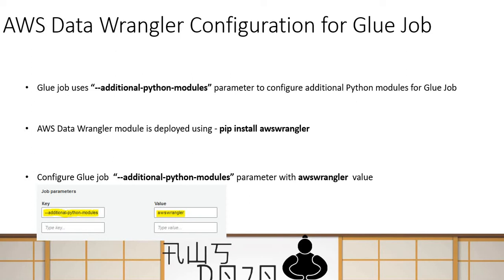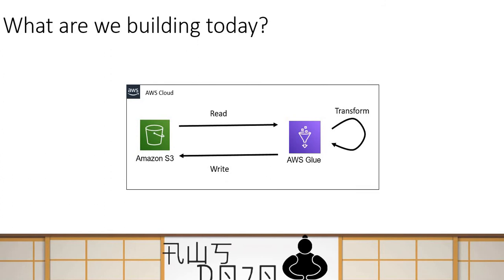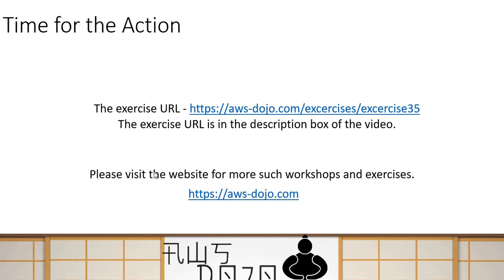What are we going to build today? It's a very simple exercise. We will have data in an S3 bucket, configure a Glue job with Data Wrangler to read data from S3, perform a simple transformation, and then write data back to the S3 bucket. An exercise for this lab has been created and uploaded to aws-dojo.com. I'll walk you through the steps, and afterwards you can run this exercise yourself to get hands-on experience using Data Wrangler with AWS Glue job.